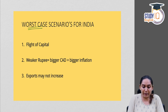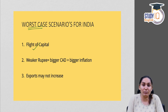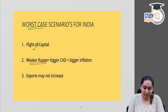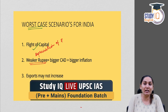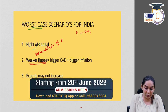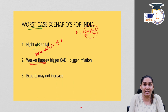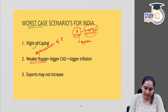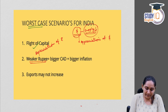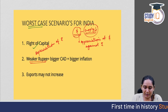The worst case scenario for India in case of fed tapering includes: first, capital flight — the U.S. economy becomes more attractive for investors, so capital flows from India to the U.S. Second, it can weaken the rupee, leading to depreciation. This happens because there is a flight of dollars from India to the U.S., reducing the supply of dollars in India, increasing demand for the dollar, and thus appreciating the dollar against the Indian rupee.